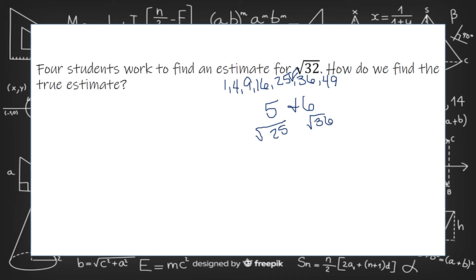32 is 4 units away from 36 and 7 units away from 25. So it's going to be closer to the 36, so it's a little over halfway. So I'd put it at about 32.7.